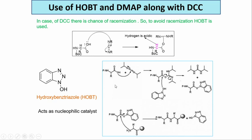If you only have DCC and nothing else, then the amine comes and attacks and DCU is released. But if you have hydroxy benzotriazole, after the formation of the intermediate - this was shown with isopropyl diisopropyl carbodiimide because there are isopropyl groups - the N-hydroxy benzotriazole comes, kicks this out as the urea, and you form another new intermediate. This is also very labile; immediately the amine comes and attacks this carbon, and you get back the hydroxy benzotriazole.